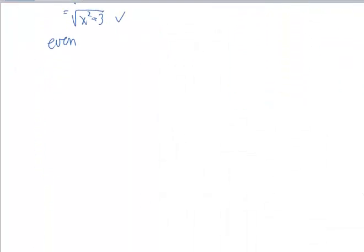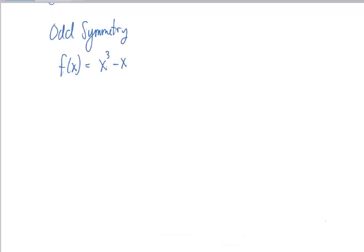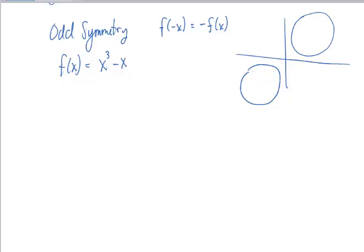Let's look at a function that's an odd function, and we'll test its symmetry. Now we're going to test for odd symmetry, and remember the rule for that is f of negative x is equal to negative f of x. This symmetry is one where whatever is happening in one quadrant should happen in the diagonally opposite quadrant.